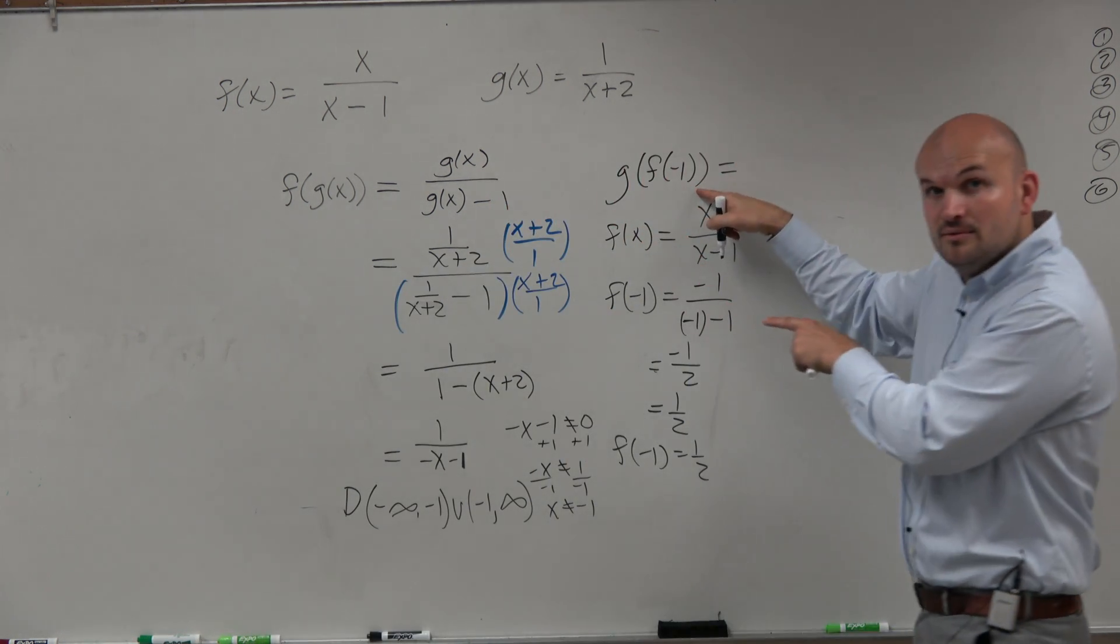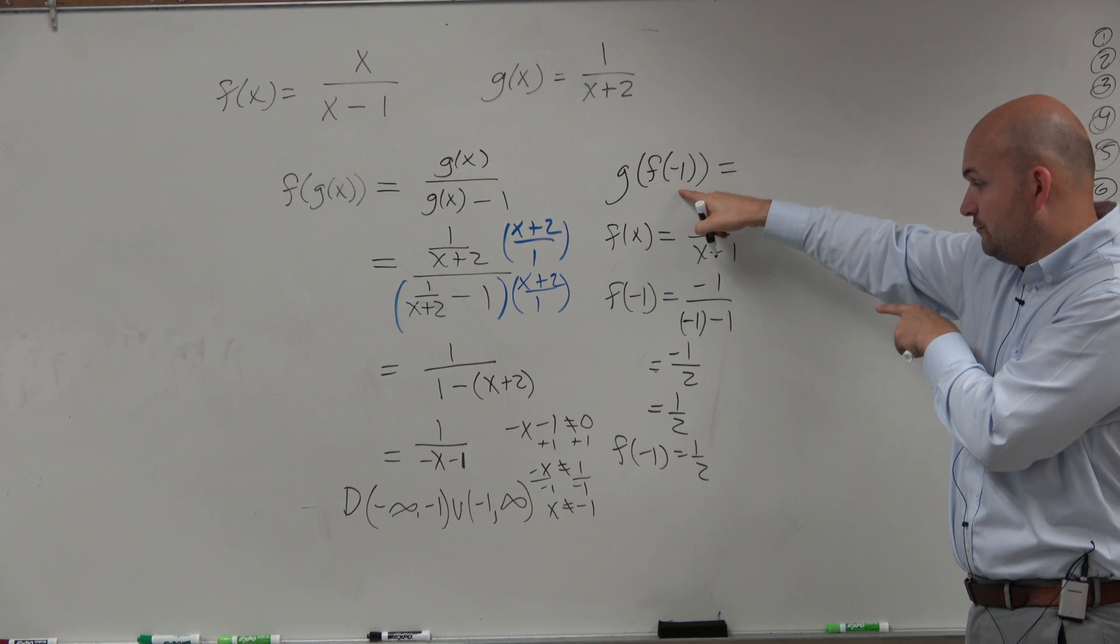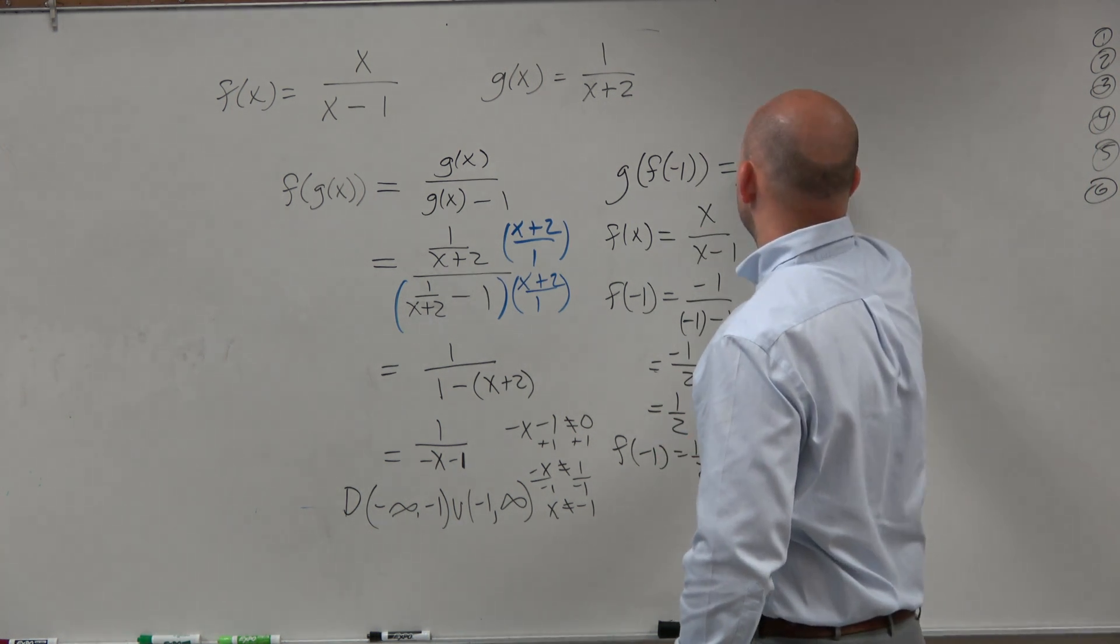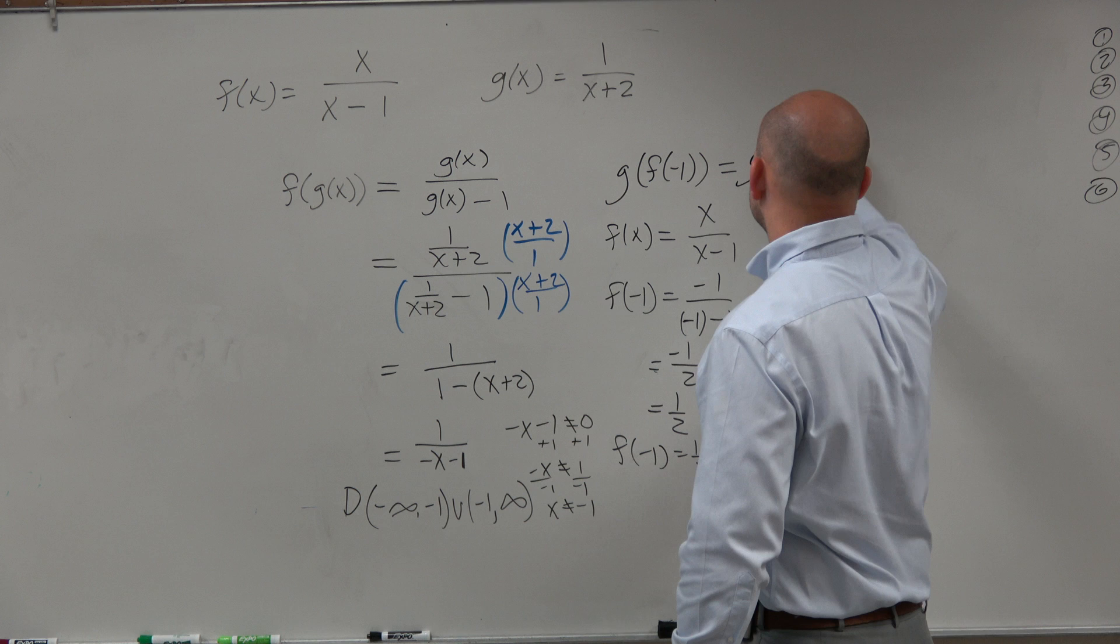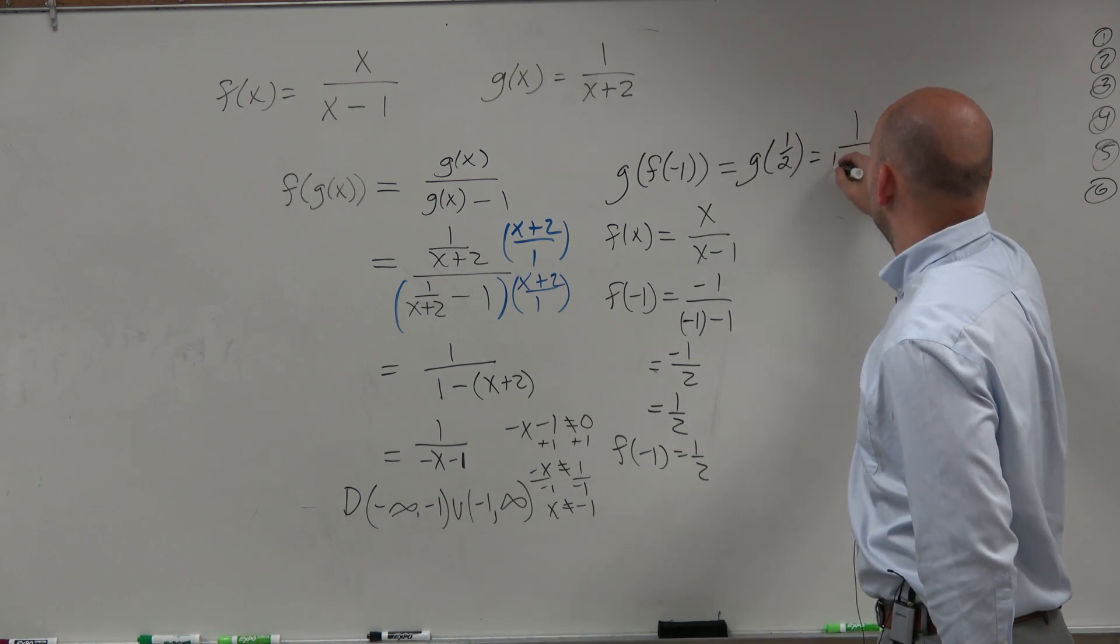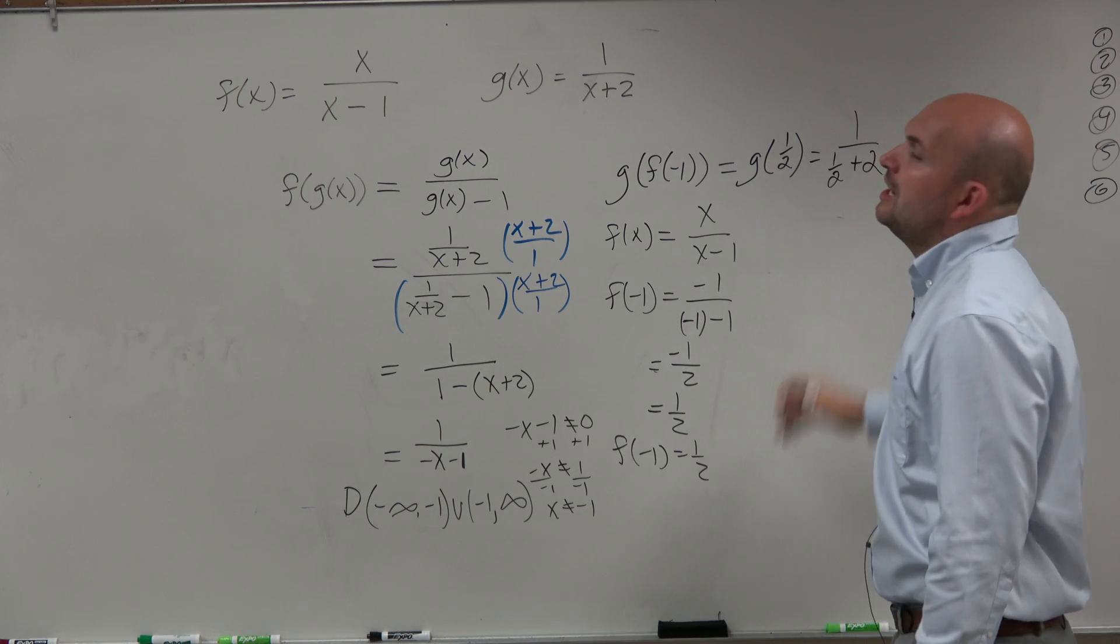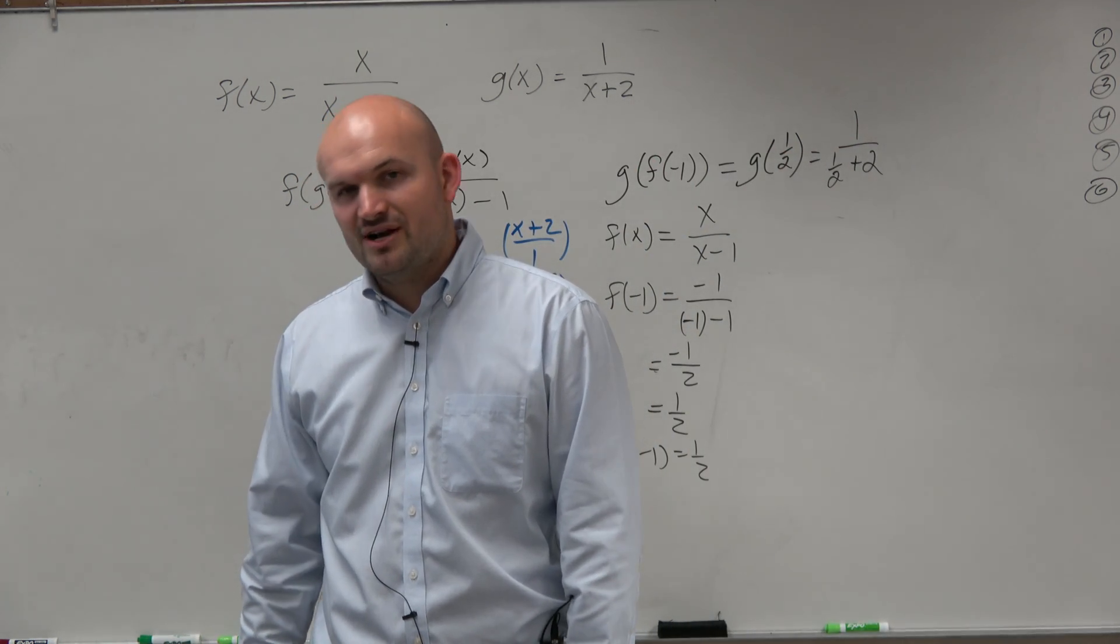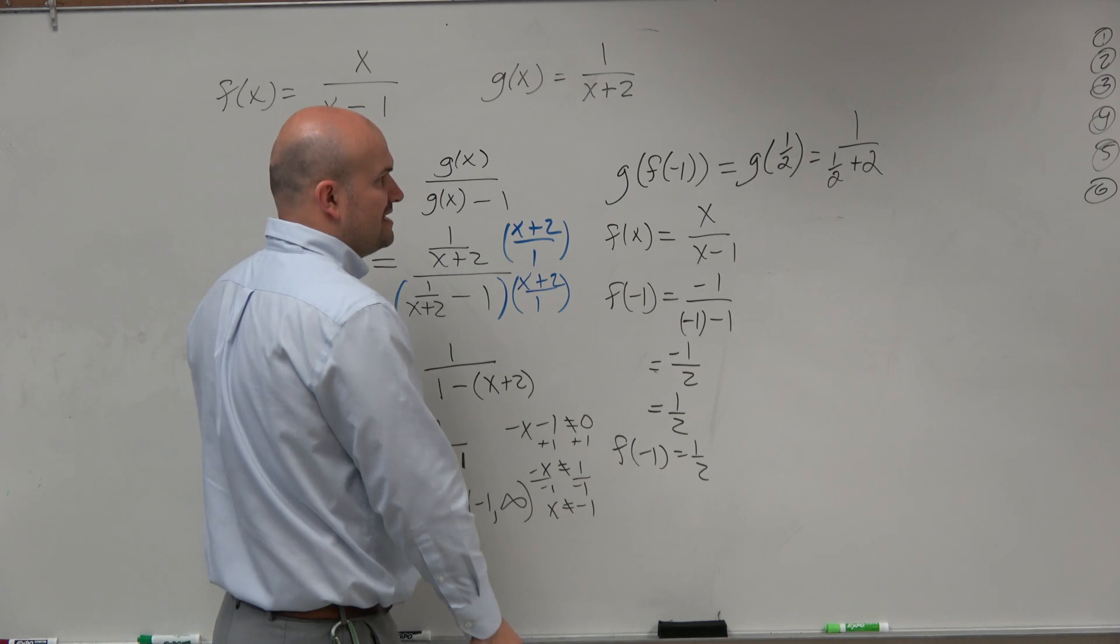Well, this is just saying plug in whatever f of negative 1 is. f of negative 1 is equal to 1 half. So it's really the same thing as g of 1 half. Well, g of 1 half is going to equal to 1 over 1 half plus 2. Ah, dang it. Fractions, I hate fractions. So let's think about this.